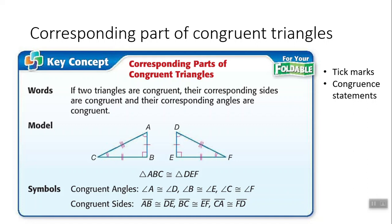The sides are also congruent. The way the letters are written in the congruence statement determines the order you list them. A and B are written first, so side AB is congruent to side DE — you can verify they each have a single tick mark. Then B and C are the second and third letters, and E and F are also the second and third letters, so side BC is congruent to side EF — keeping everything in the same order.